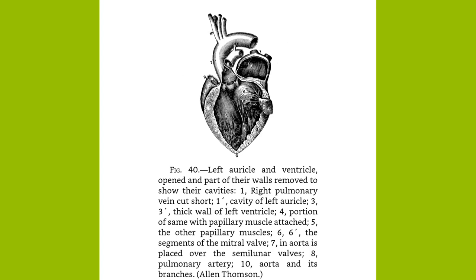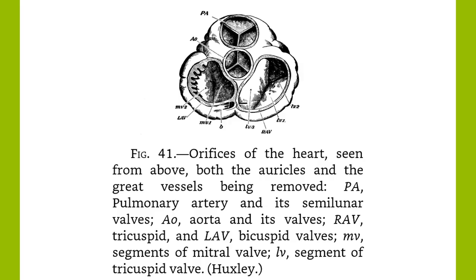Of these, the vagus is the inhibitory mechanism. It acts as a check and makes the heart's action regular and rhythmic. If it is cut, the action of the heart becomes very rapid and irregular. The sympathetic is the acceleratory mechanism. When the vagus alone is stimulated, it first slows, then stops the heart, for it weakens the systole and prolongs the diastole.